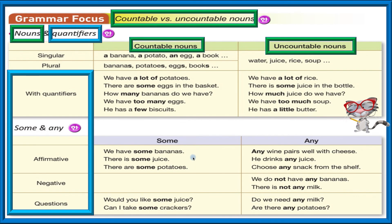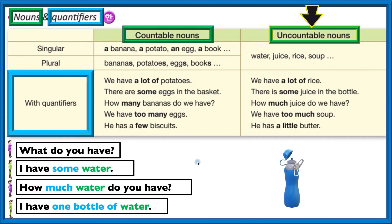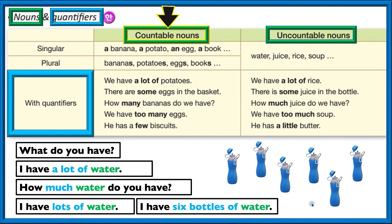Now the uncountable ones. 'What do you have? I have some water. How much water do you have? I have one bottle of water.' Notice how Yonghi mentioned the container — so 'I have one bottle of water' is more specific and detailed. Another example: 'What do you have? I have a lot of water. How much water? I have lots of water — I have six bottles of water.' Six bottles is very detailed and specific. Notice: 'a lot of water' and 'lots of water' have basically the same meaning. With water we use 'much.'